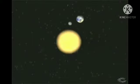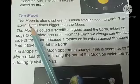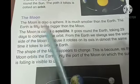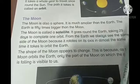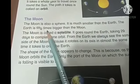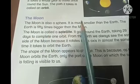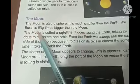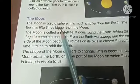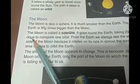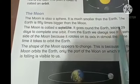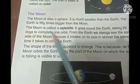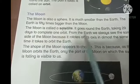The moon is a secondary object that orbits around the primary object, Earth, while the Earth and the moon are both orbiting the Sun. The moon is also a sphere — it is much smaller than the Earth. The Earth is 50 times bigger than the moon, so our Earth is bigger and the moon is smaller. The moon is called a satellite.